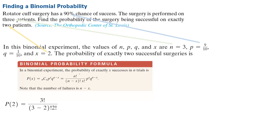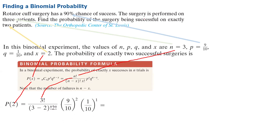P of 2 — since X equals 2, wherever we see X we substitute 2. This gives us 3 factorial divided by (3 minus 2) factorial times 2 factorial, times P to the X times Q to the n minus X. Since 3 factorial equals 6, 2 factorial equals 2, and 1 factorial equals 1, the combination simplifies.